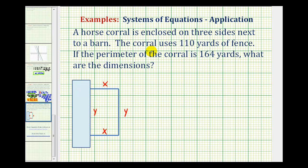We're given two pieces of information that will allow us to set up two equations, and then we'll solve this as a system of equations. If the corral uses 110 yards of fence, the fence would be along this side and this side, but then only this side here, because this other side is along the barn. So this tells us x plus x plus y must equal 110 yards. But x plus x would be 2x, so one equation is 2x plus y equals 110.